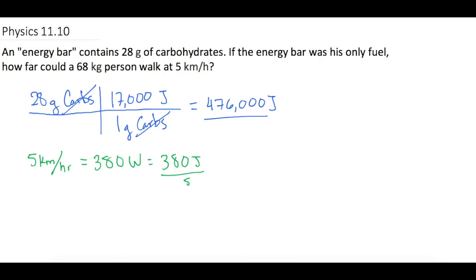Now you might see where we're going with this. We know we have 476,000 joules to work with and he's walking at 5 kilometers per hour which costs him 380 joules for every second. When we do that, the joules cancel and we'll know how long he's able to walk for. But we don't want to know the time, we want to know how far he can go.